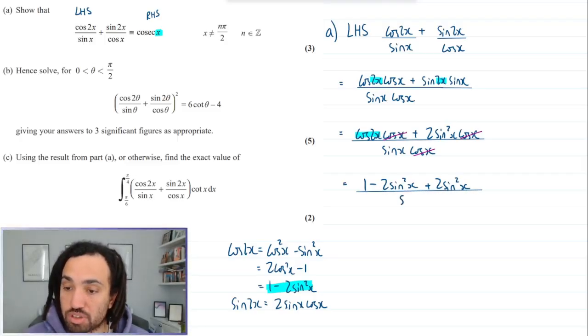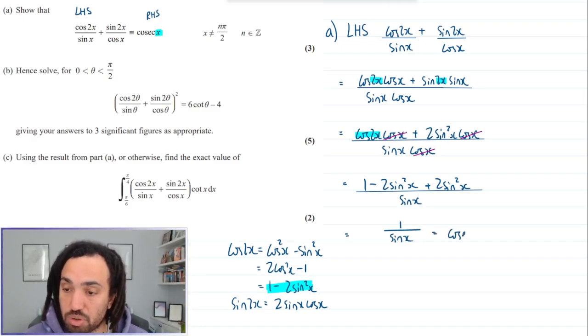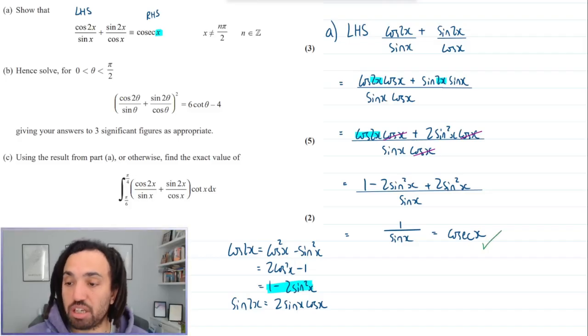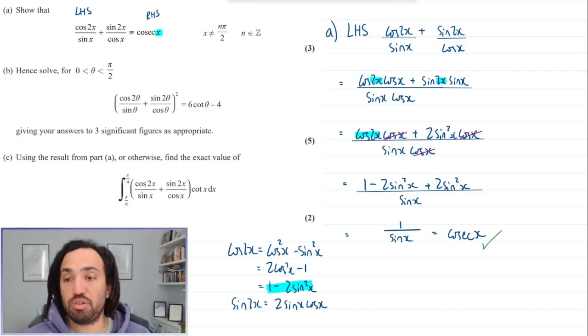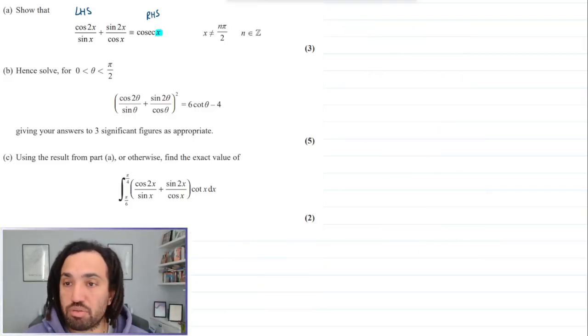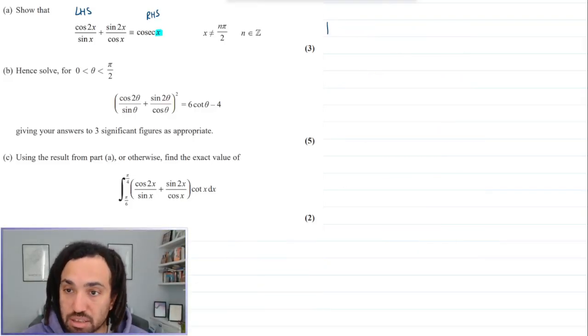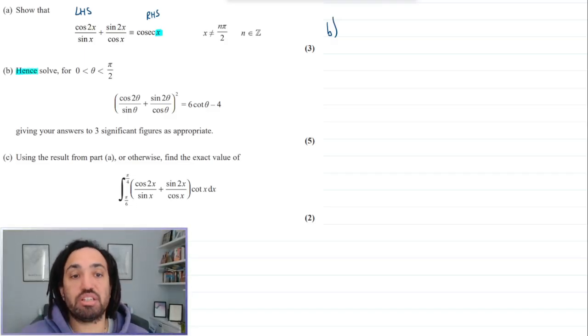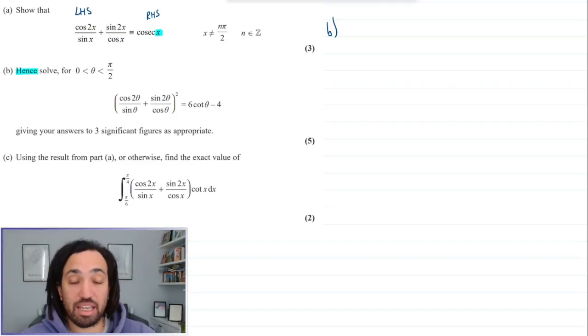And that's all over sin x which leaves me with just 1 over sin x which is of course cosec x. So brilliant, we have done part a and I will move on to part b. Part b uses this word here 'hence' which means I do need to use part a in my solution.